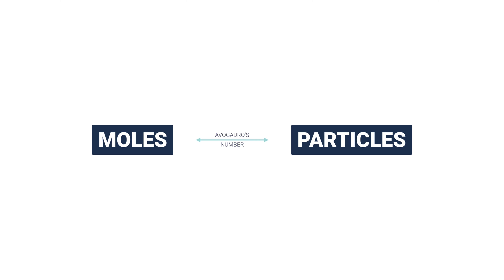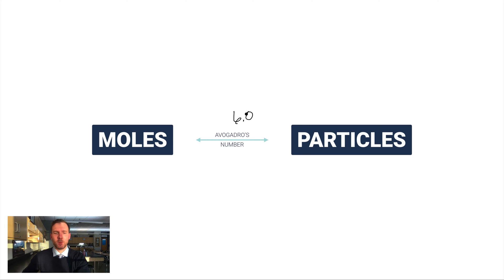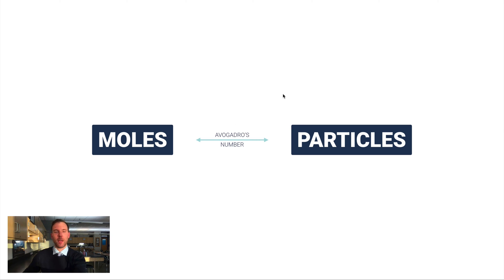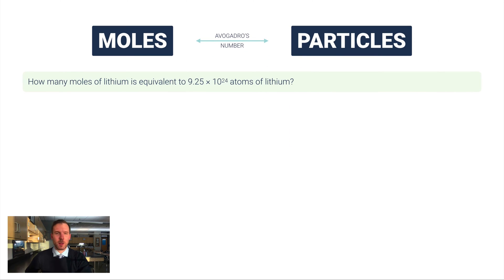The answer is something called Avogadro's number: 6.02 times 10 to the 23rd. This simply means that this number of particles is equivalent to one mole, and that's true of anything. A mole is like a dozen — a dozen means 12, and a mole simply means this big number, 6.02×10²³ particles.